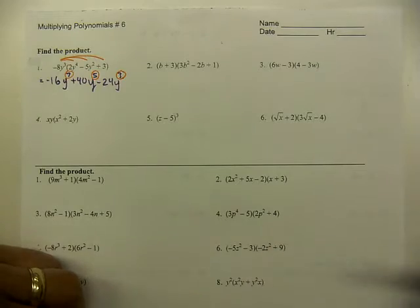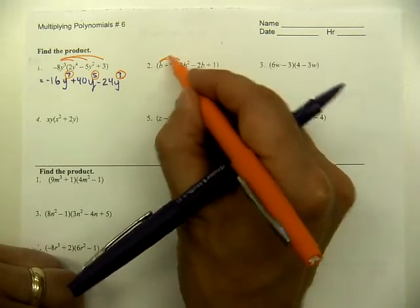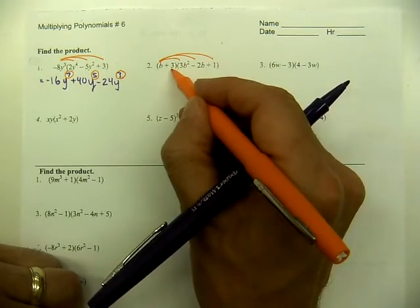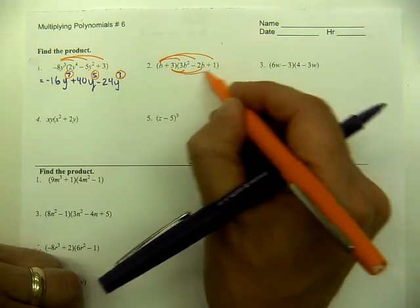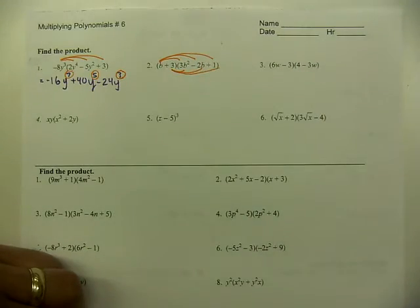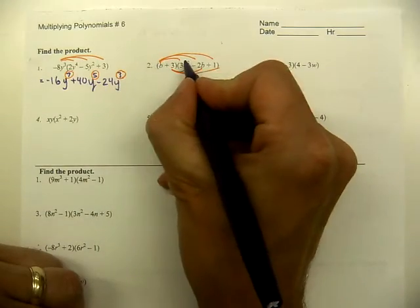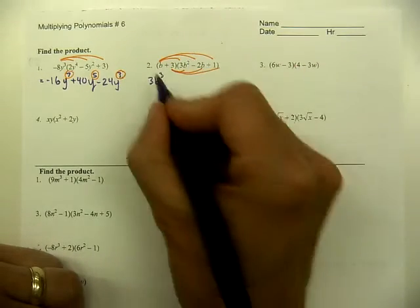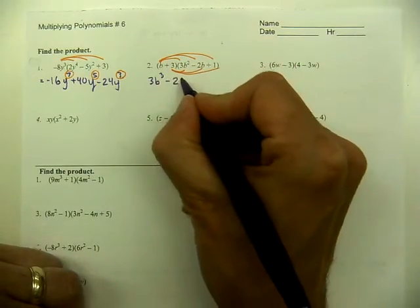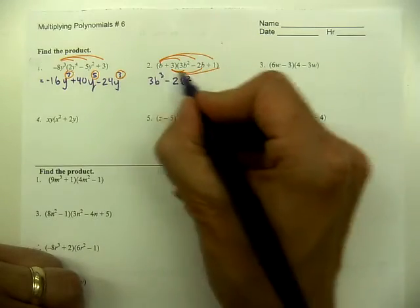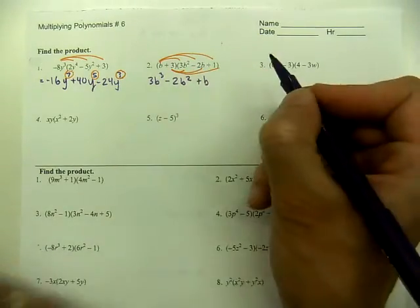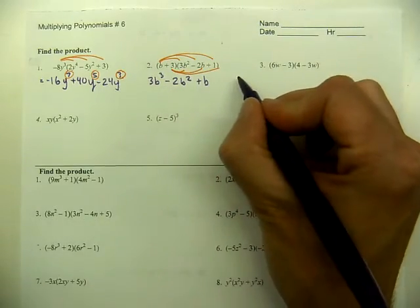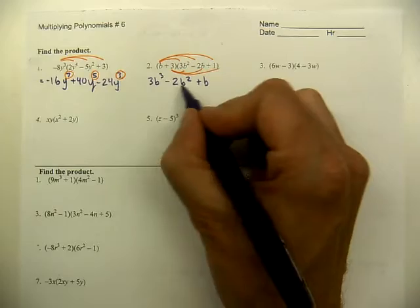Take a look at problem number two. This is really a double distribution. We'll take the b and distribute it to the trinomial, then come back through a second time and take the three and distribute it to the trinomial as well. Here we go: 3b to the power of three—you add a power of one plus the power of two. Here you have minus 2b squared. Here you have a positive b.